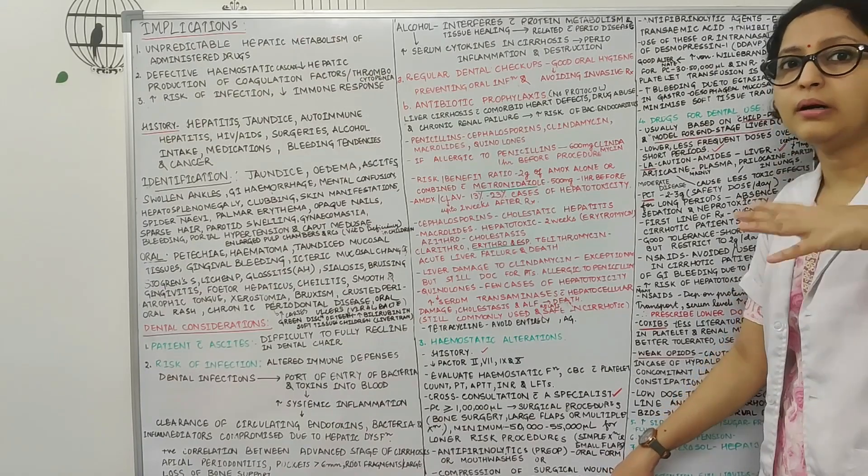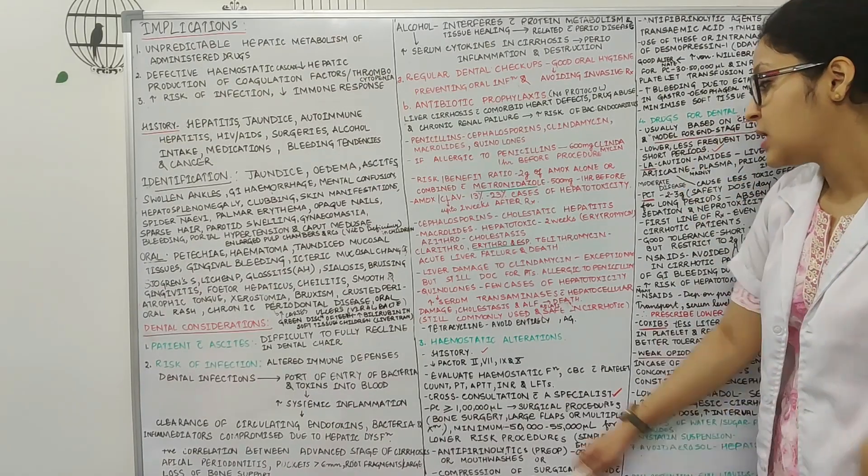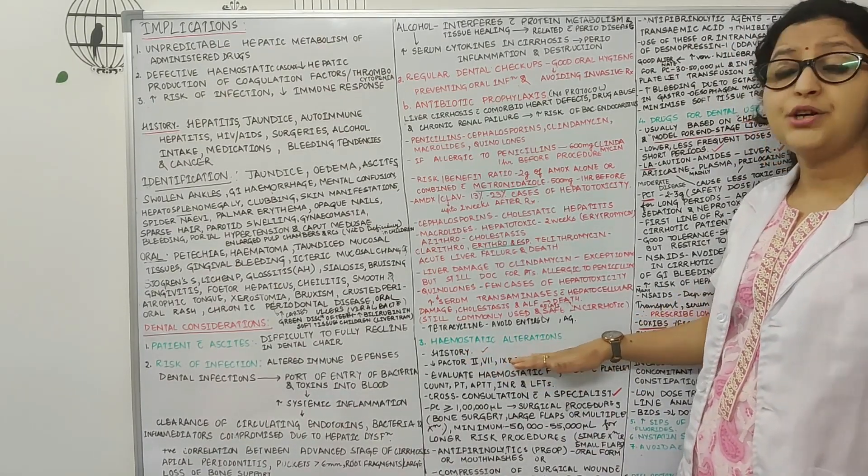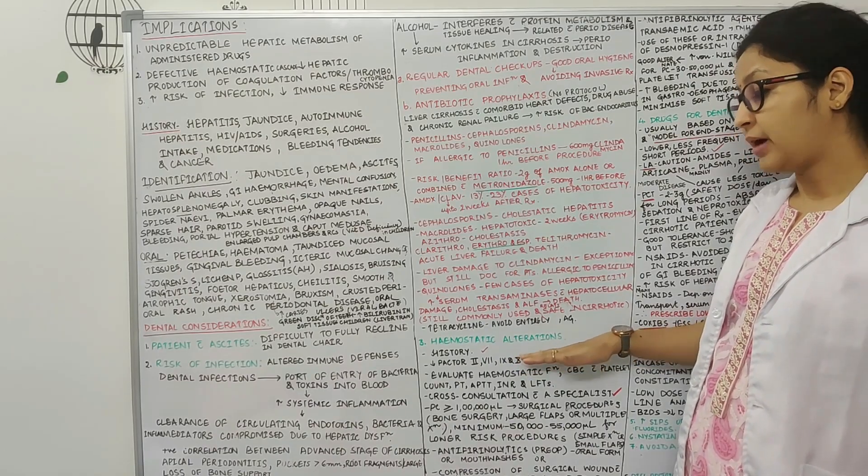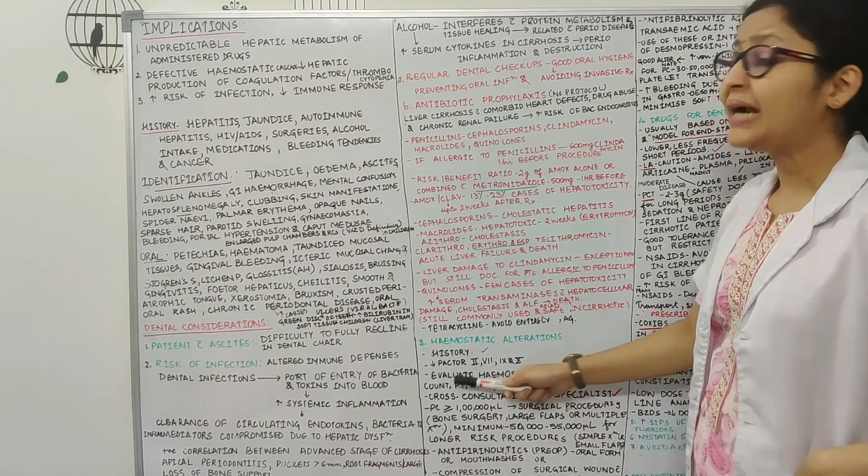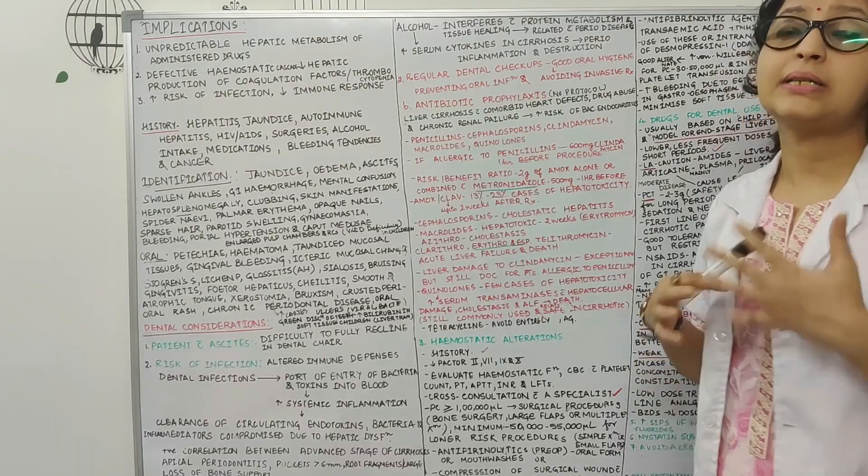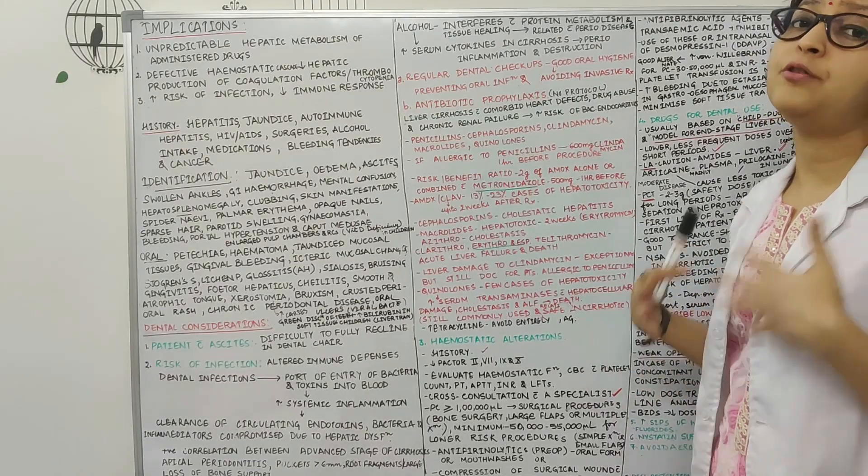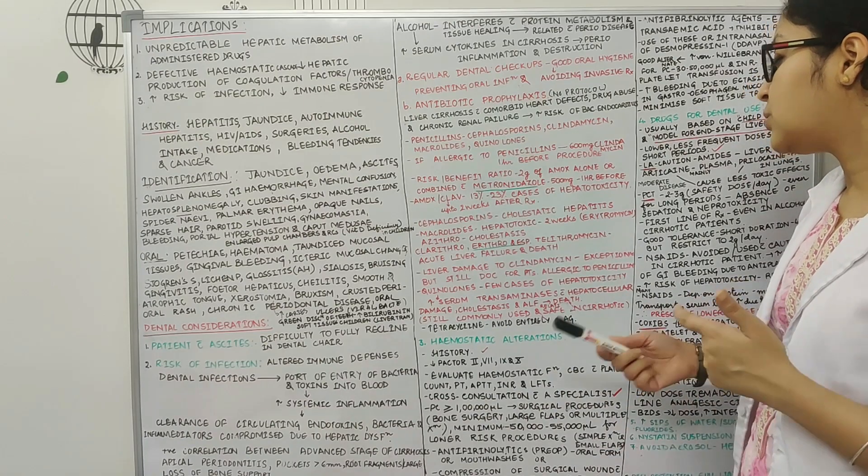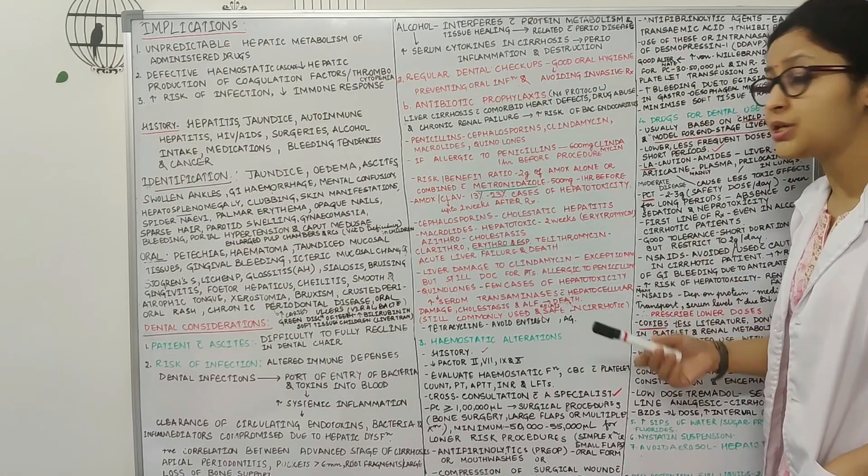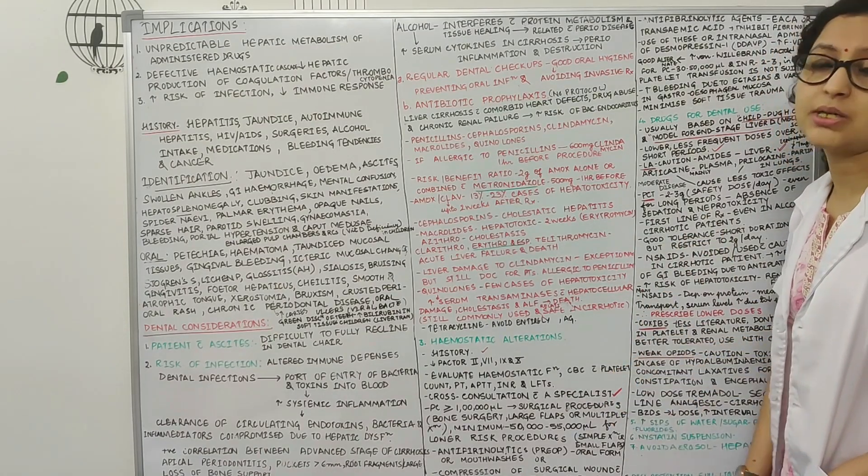Then coming to the hemostatic alterations, history is very important. There's reduced factor 2, factor 7, factor 9 and factor 10 in such patients and we need to advise certain tests: bleeding time, clotting time, and also liver function test, CBC, platelet count in such patients before we start or plan any kind of treatment. It's very important that we also do a cross consultation with a specialist or ask the general physician of the patient. Always take consultation from the specialist before we think about or plan any kind of treatment in such patients.